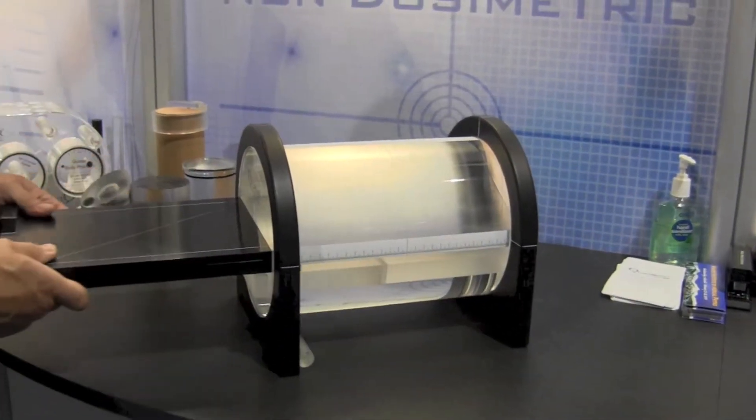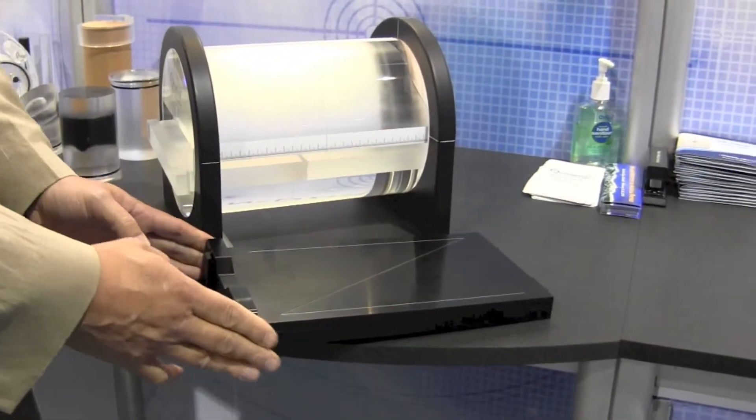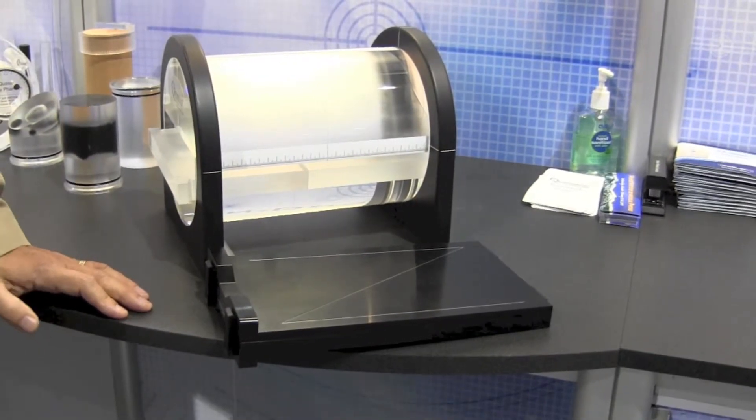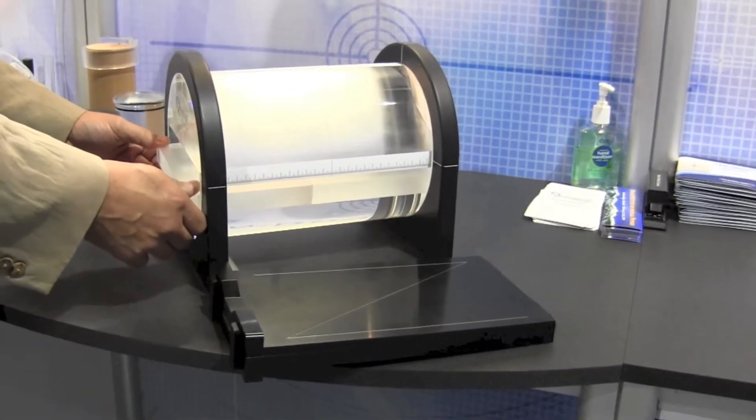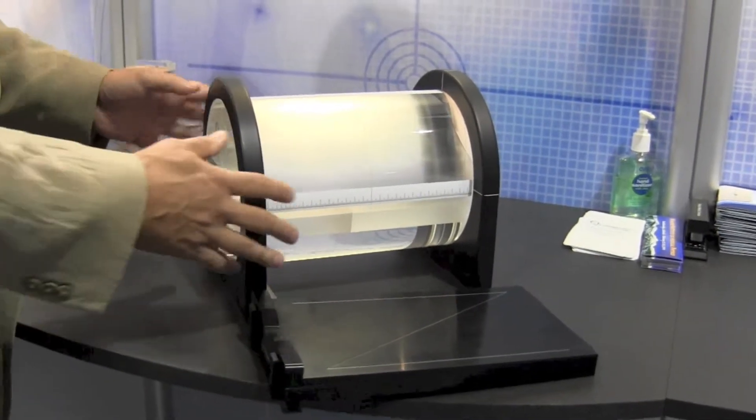Within the Phantom I have inserts for film. This is an opaque cassette for light sensitive film, for wet process film. We also have a cassette for gaffchromic film, for radiochromic film.